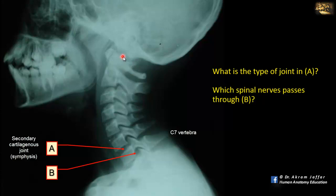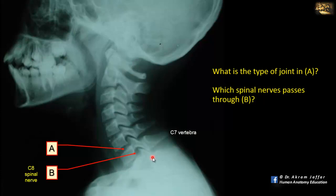There are eight cervical spinal nerves. C1 passes above the atlas, C2 above the axis, C3 above the third cervical vertebra, and between C6 and C7 it is the seventh cervical nerve. However, between C7 and T1 vertebra it is the C8 spinal nerve. Spinal nerves exit the intervertebral foramen below the vertebra corresponding in number, but here between C7 and T1, it is C8.